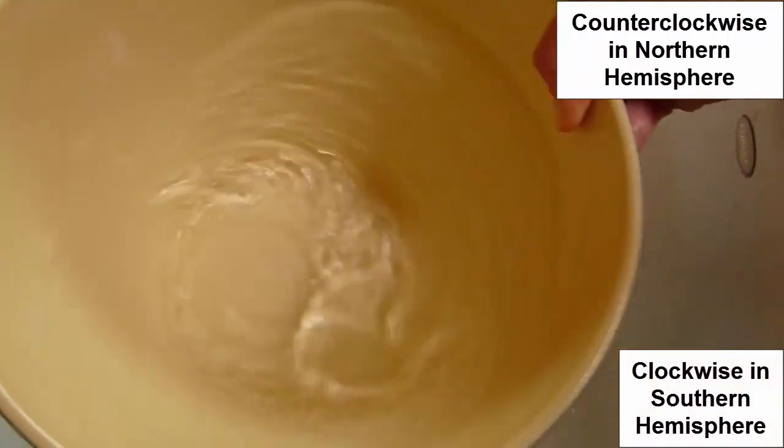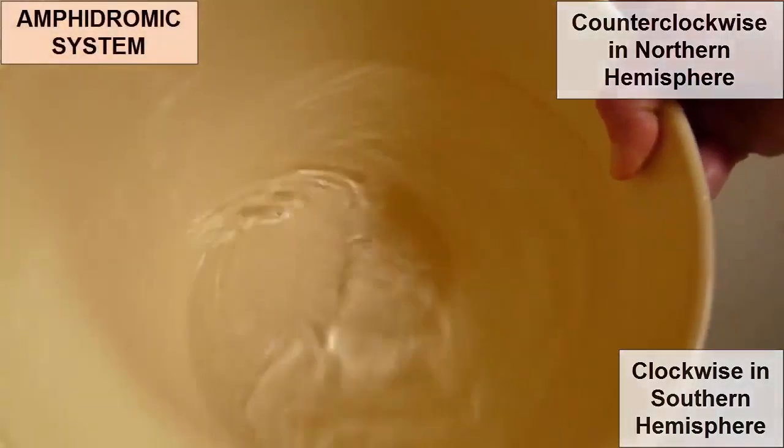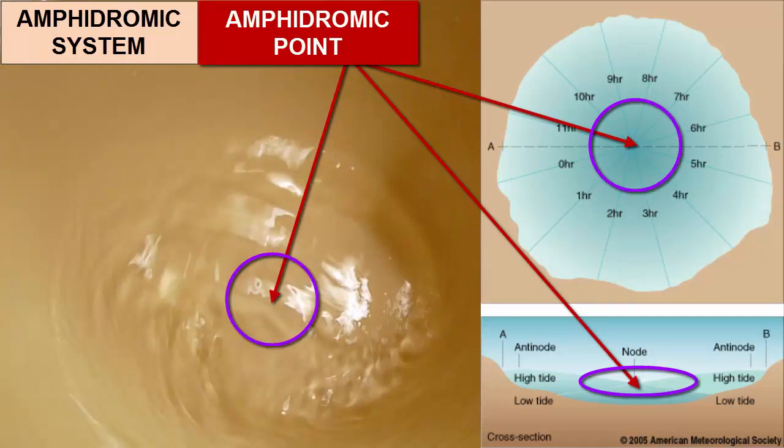We call each ocean basin, around which tides slosh, an amphidromic system. In the center of each bucket of sloshing water, there's a point where the water level doesn't change. We call that the amphidromic point. Around the amphidromic point, the tides rotate once every 12 hours and 25 minutes.